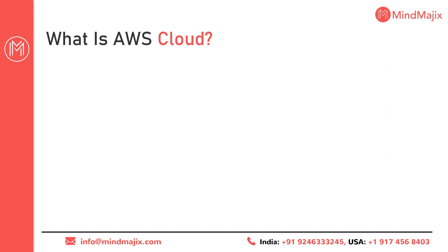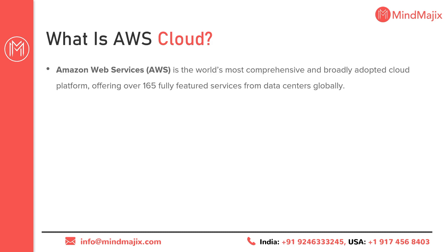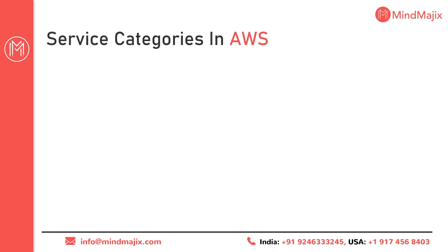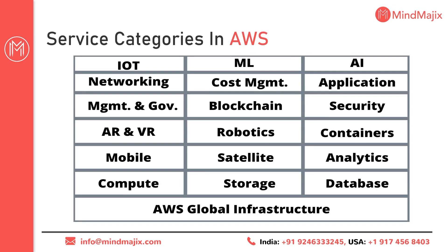What is AWS Cloud? AWS came around 2006. Amazon initially created this platform for their e-commerce site, Amazon.com, and later decided to sell it as a service. AWS provides around 165 services across several categories including IoT, machine learning, AI, databases, analytics, satellite, robotics, blockchain, cost management, mobile, compute, and networking.